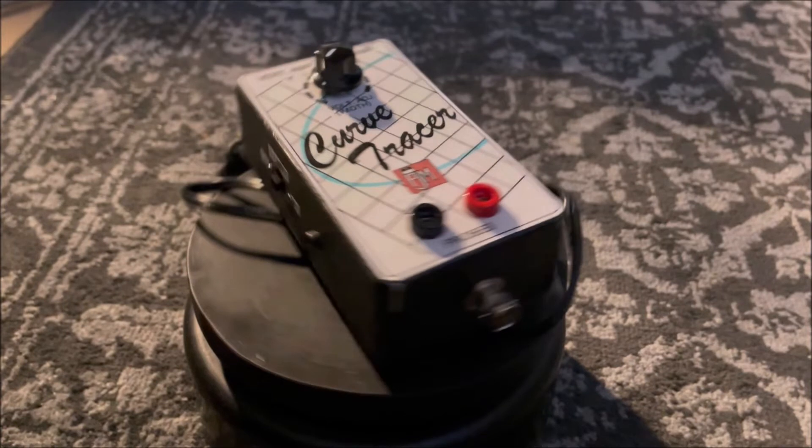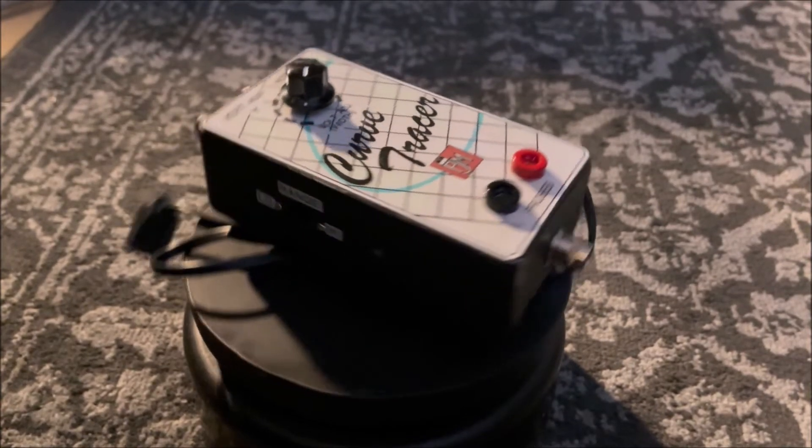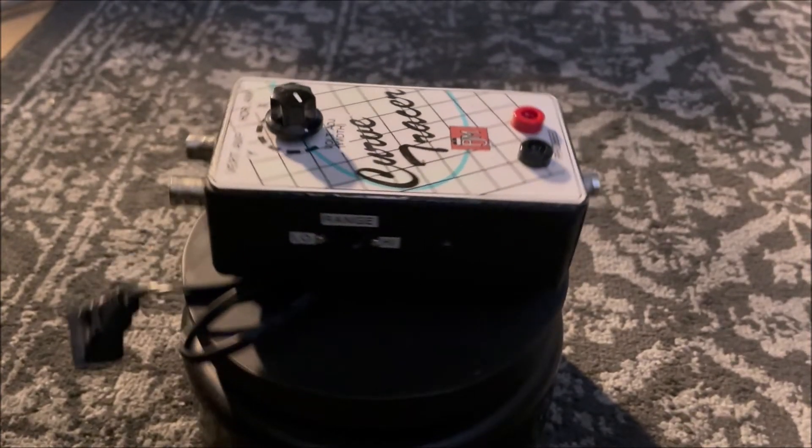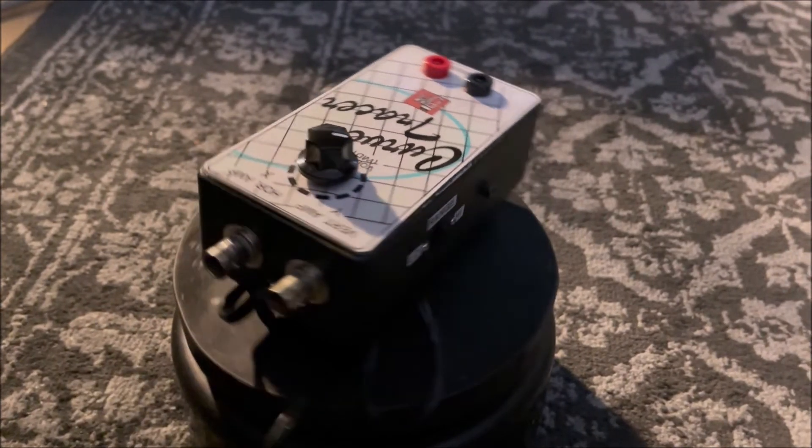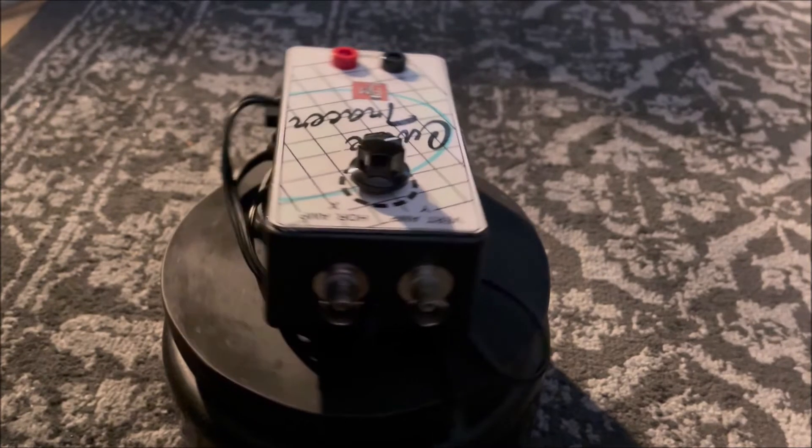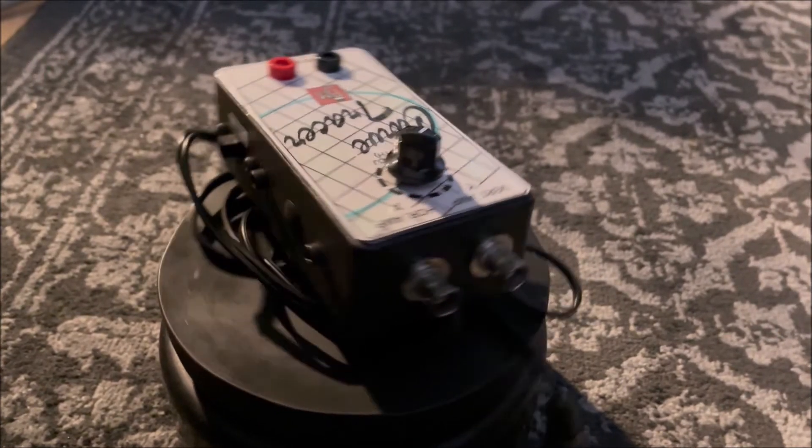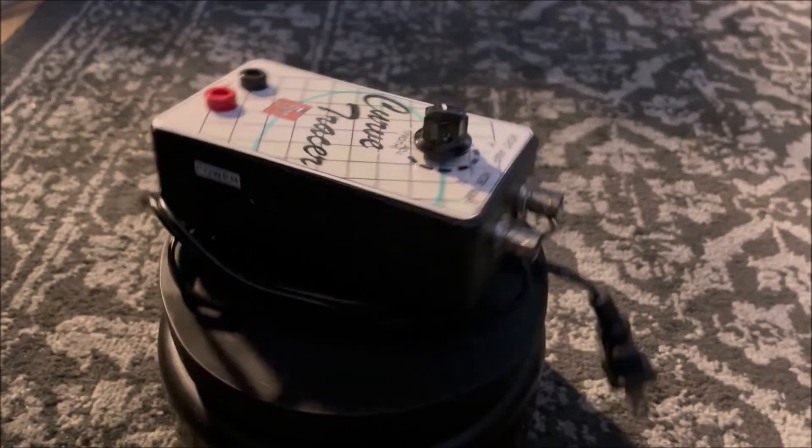This device allows an oscilloscope to display the voltage across the component under test on the horizontal X-axis versus the current through that component on the vertical Y-axis. In essence, this plots in real time a Lissajous pattern on the screen.